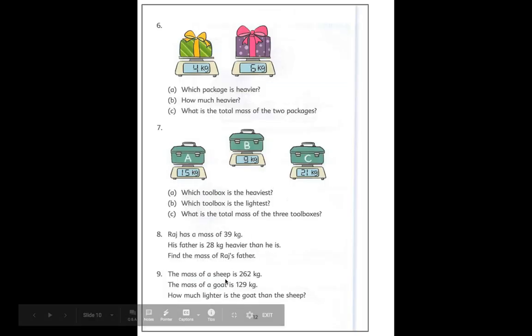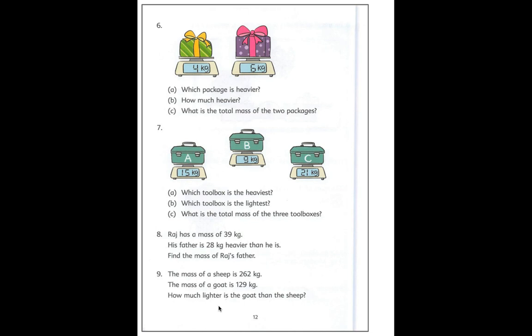Okay let's try it again for another problem. The mass of a sheep is 262 kilograms. The mass of a goat is 129 kilograms. How much lighter is the goat than the sheep? Pause the video, draw a bar model, label everything, show your work, and write an answer statement and we'll look at the answers together.